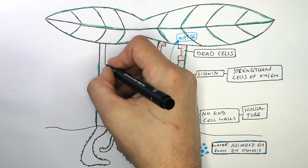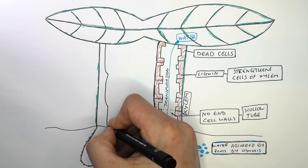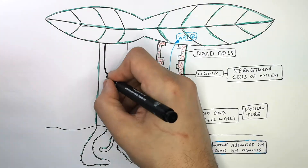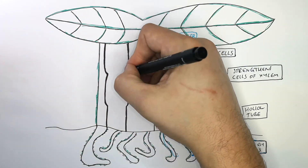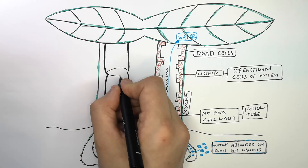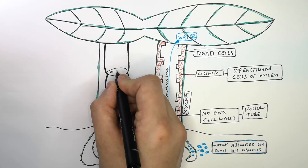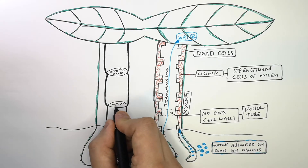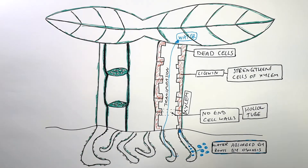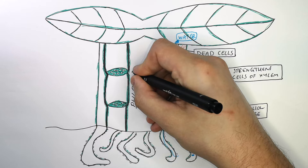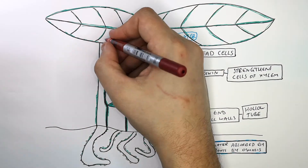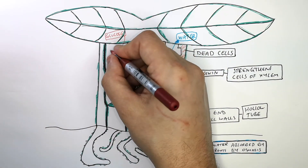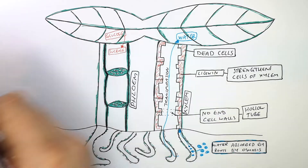I'm now drawing the phloem. The phloem is tissue in the plant that transports sugar as sucrose. The sieve plates that I'm drawing now have holes in them with pores in them, and they separate the compartments of the phloem. This is the phloem — it is where glucose, which is produced during photosynthesis, is transported around the plant as sucrose.